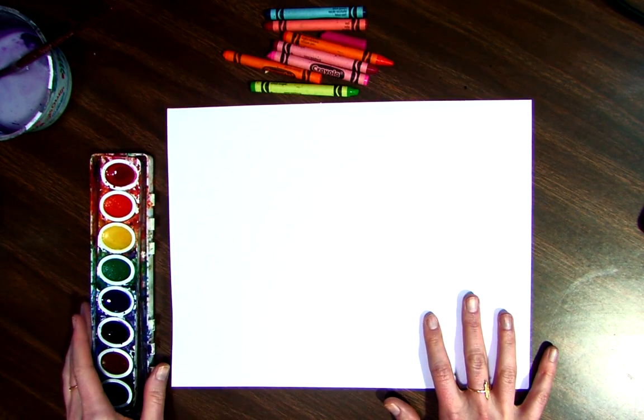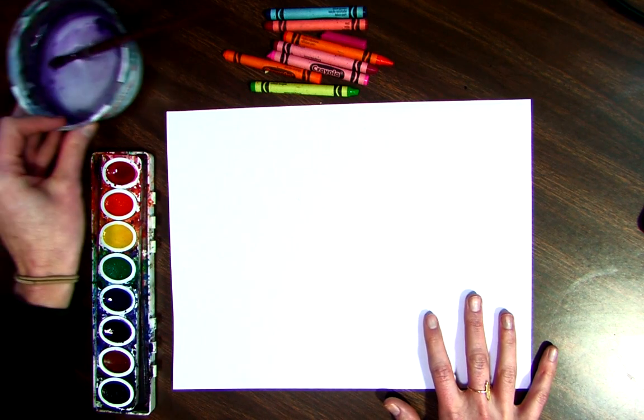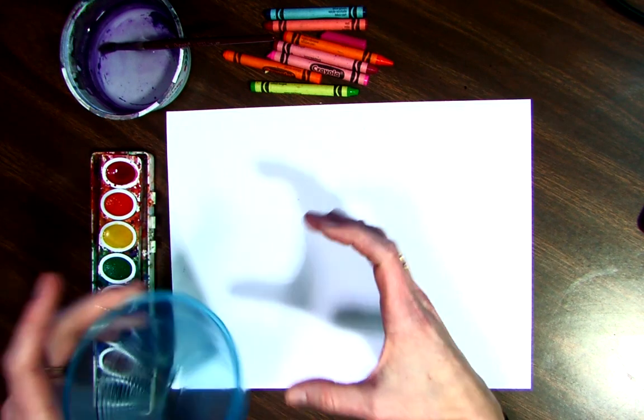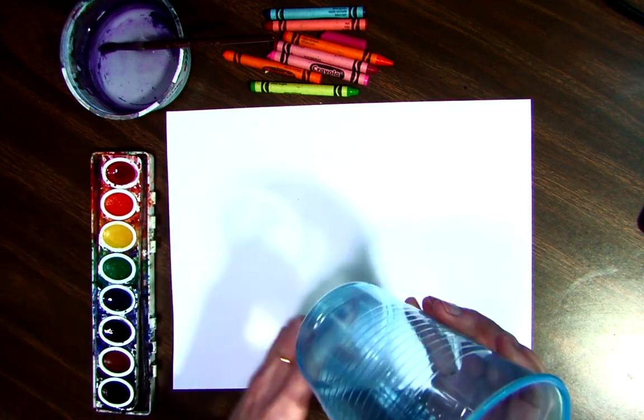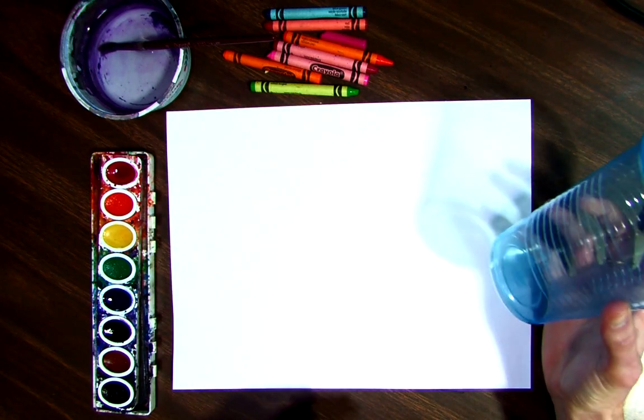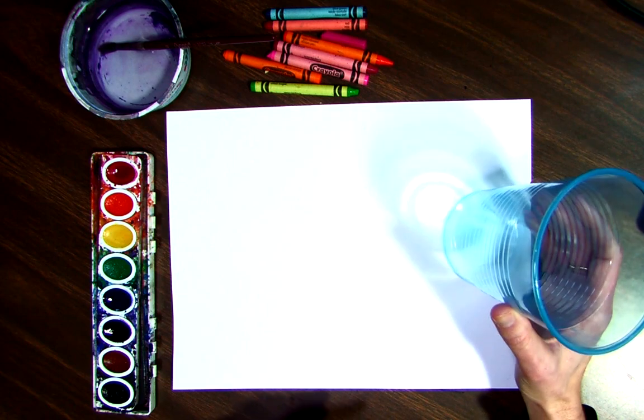You'll use your watercolor set. I have my little cup of water and my paintbrush, and something round to trace. You could use a bowl, you could use a lid, you could use a cup. And if you don't have something round to trace you can always just draw a circle too, it will be up to you.